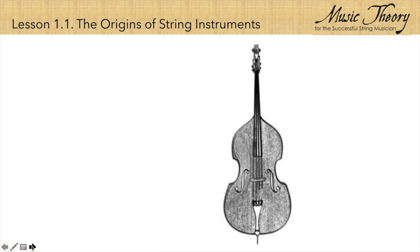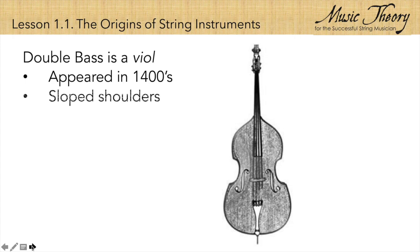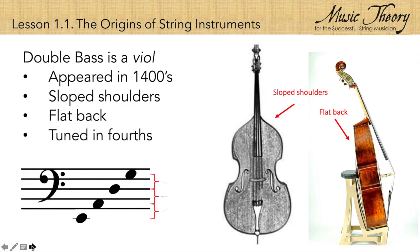The string bass comes from a family of instruments known as the viols, and it's much older than the violin, viola, and cello in our orchestras. The viols appeared in the 1400s, and you'll notice that they have sloped shoulders, a flat back, and they are tuned in fourths.